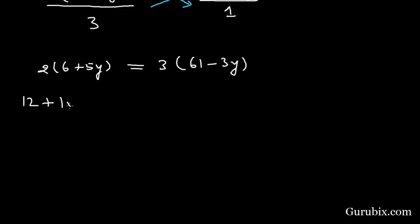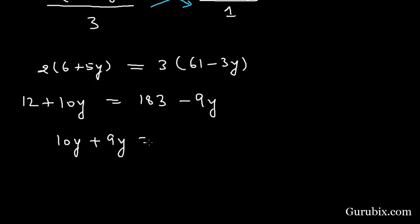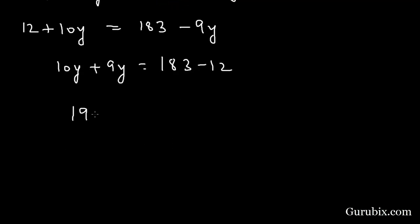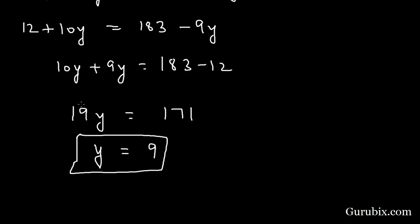Expanding: 12 + 10y = 183 − 9y. Bringing −9y to the left and 12 to the right: 10y + 9y = 183 − 12, so 19y = 171. Therefore y = 9.